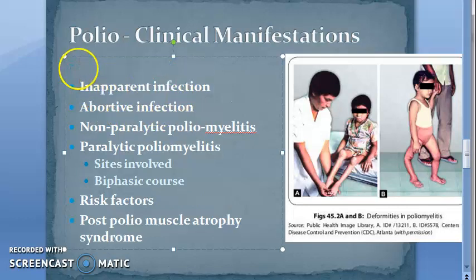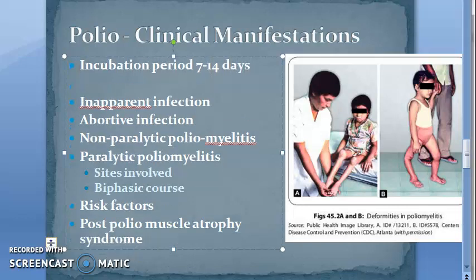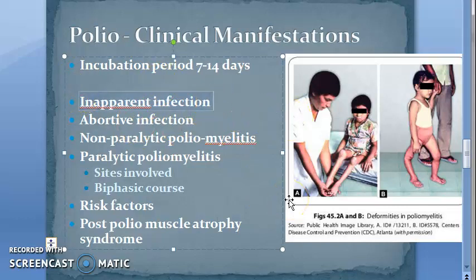So what is the incubation period? 7 to 14 days. Let's first look at inapparent infection — inapparent infection means the majority of cases where you won't even know that they have the polio infection. 96% are asymptomatic — can you imagine?